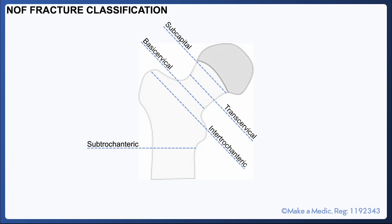There's a fibrous capsule that encases and reinforces the hip joint. Subcapital and transcervical fractures are intracapsular, whereas the other forms of fracture are considered extracapsular.